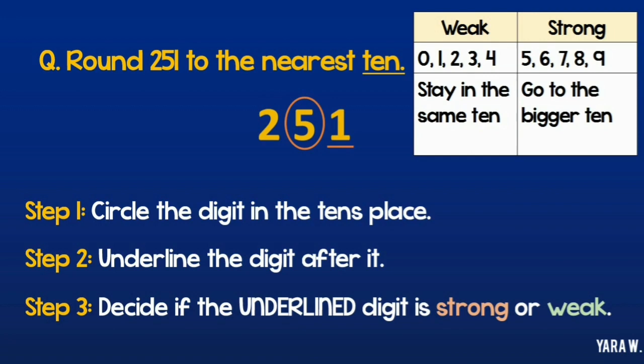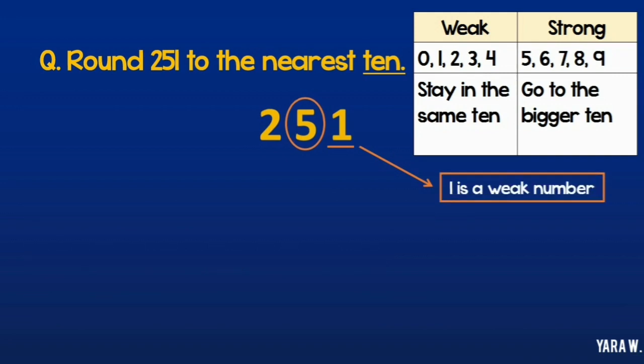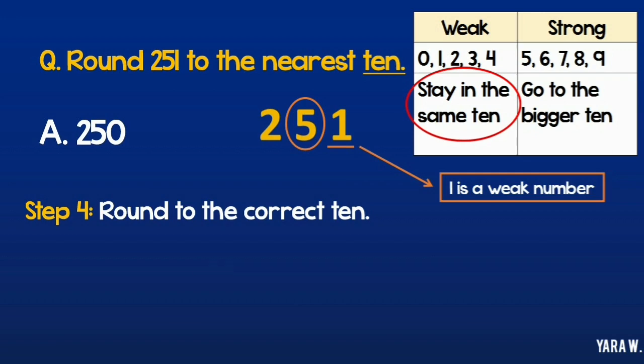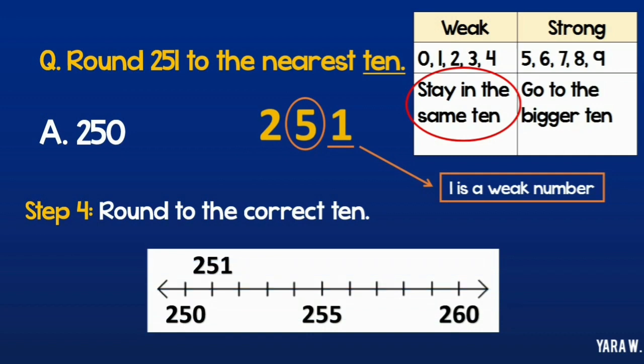The digit which is 1 is a weak number. Now step number 4 is to decide which way to go. Now since 1 is a weak number, I am going to stay in the same 10, which is 50. So the answer is going to be 250. Notice that the hundreds did not change. Now check the number line. You will find that 251 is nearer to 250 than 260.